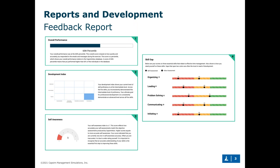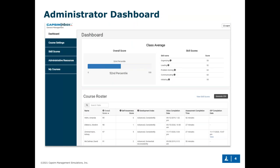Most importantly, the feedback report visualizes skill gaps for students — plotting where the inbox placed them versus where they placed themselves — identifying key strengths and areas for improvement. From the administrator side, you'll have a course dashboard showing overall scores and percentile averages for the cohort, averages for each skill being assessed, and a course roster with individual results including overall score, completion time, and individual development plan status, which instructors can view and provide feedback on.